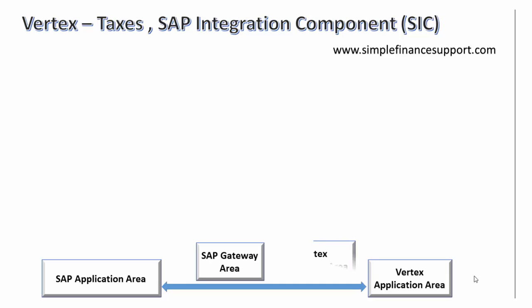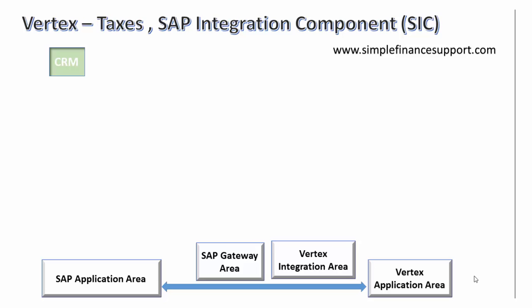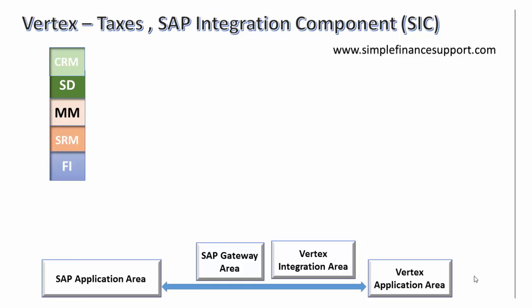There is a gateway and a Vertex integration area — these are the two distinct components within which the integration happens. The application areas primarily integrated with Vertex are CRM, SD (Sales and Distribution), MM (Materials Management), SRM (Supplier Relations Management), and Finance. These five application area components have hooks to call Vertex and get back the results.